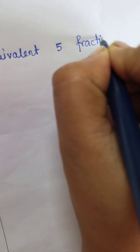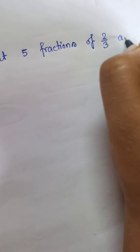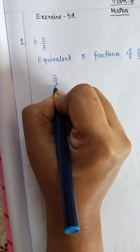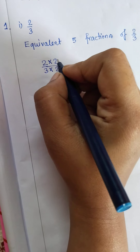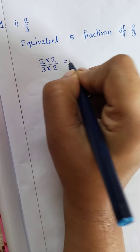To find 5 equivalent fractions of 2 by 3, first we will multiply the numerator and denominator with 2. Then for the next fraction equivalent to 2 by 3, we will multiply the numerator and denominator with 3 to get the next equivalent fraction.